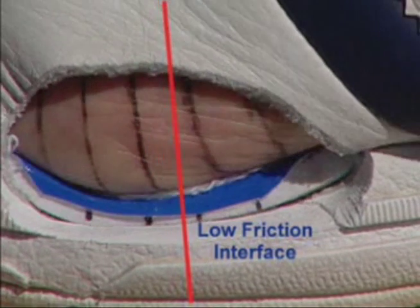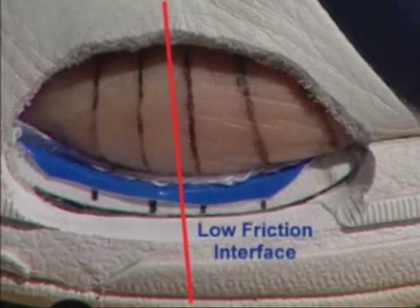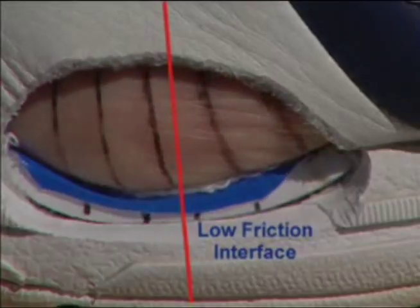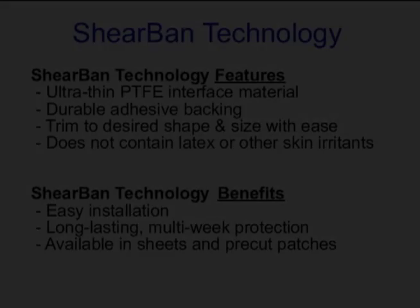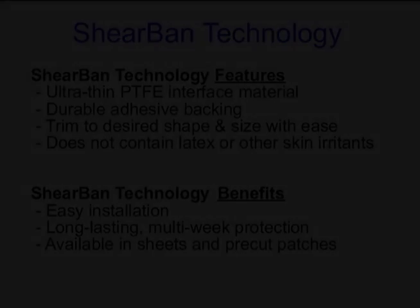It is not rubbing per se that creates trauma and discomfort. It is actually the high shear stresses caused by friction prior to sliding that determine how fast the microtrauma accumulates. The minimization of the shear forces prevents blisters, hot spots, and other forms of skin trauma, which allows a person to remain active and train harder, faster, and longer.